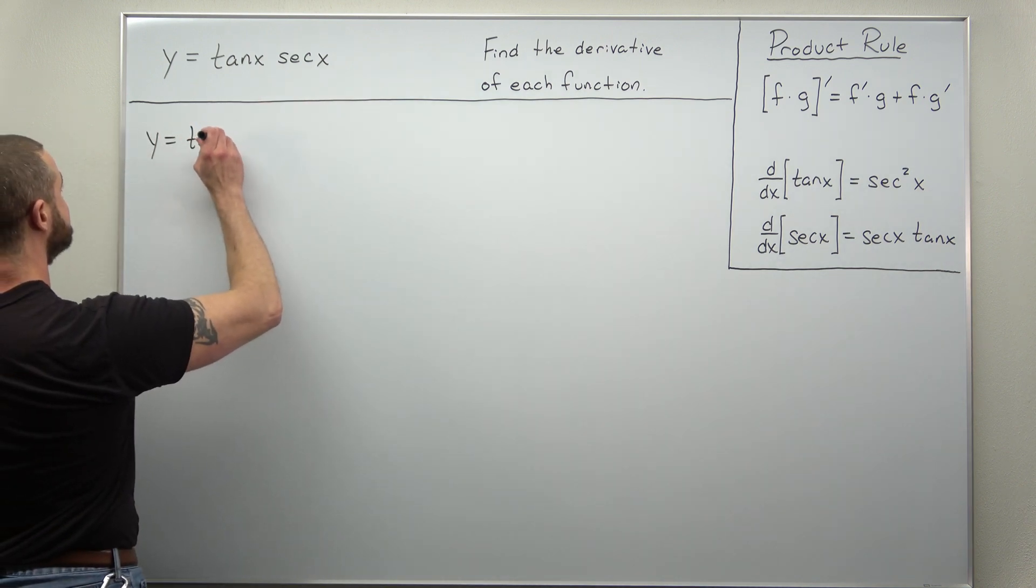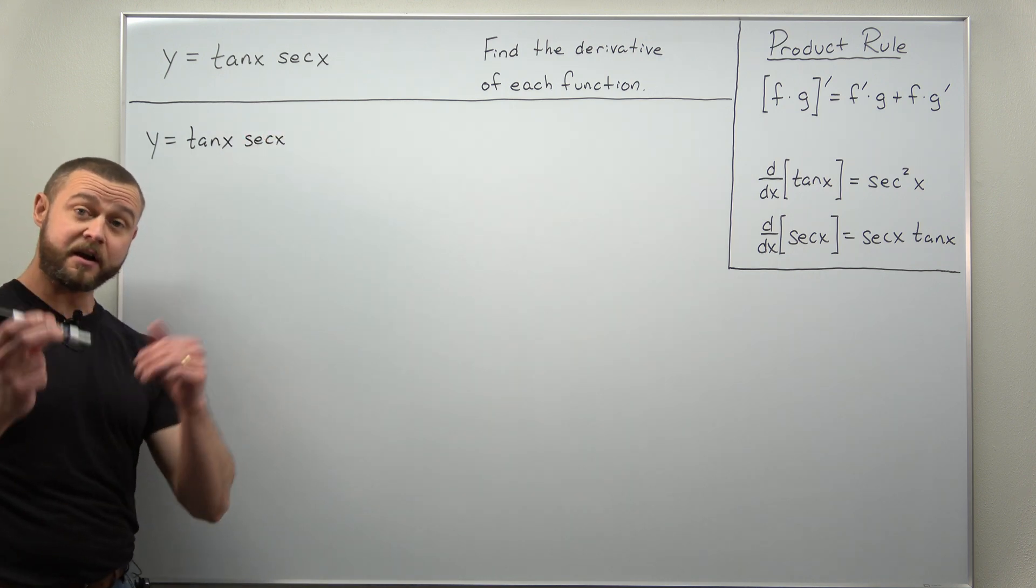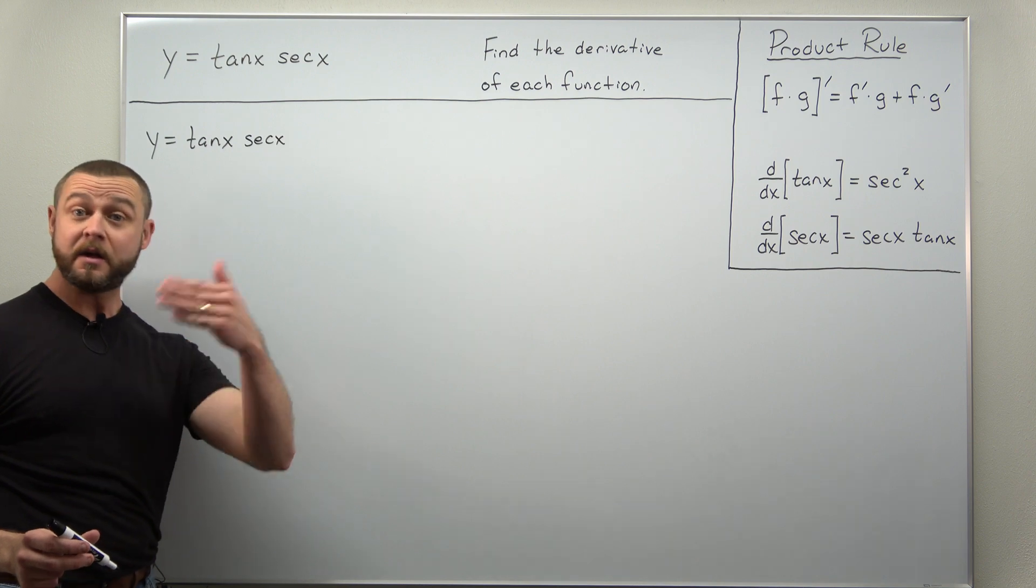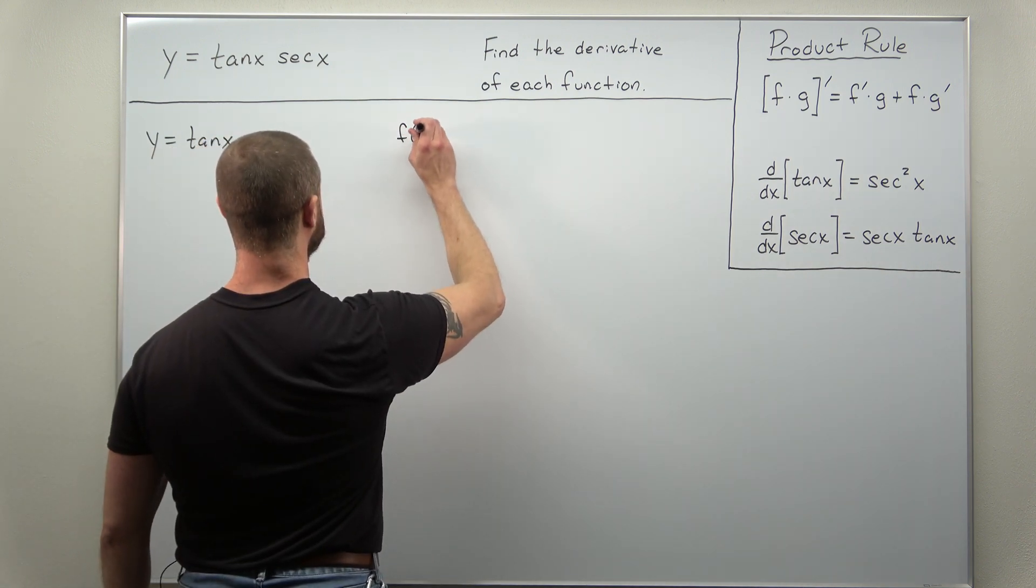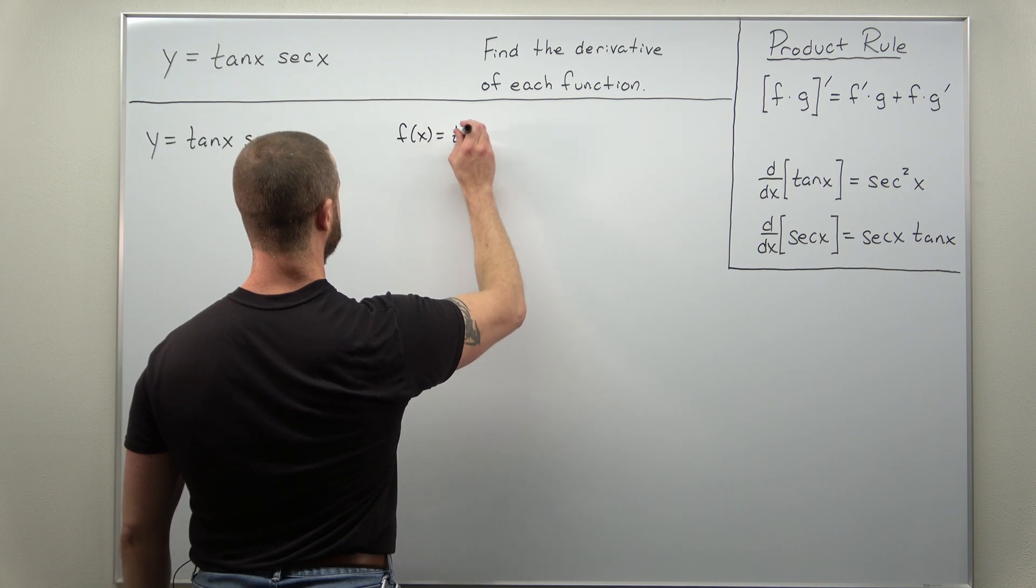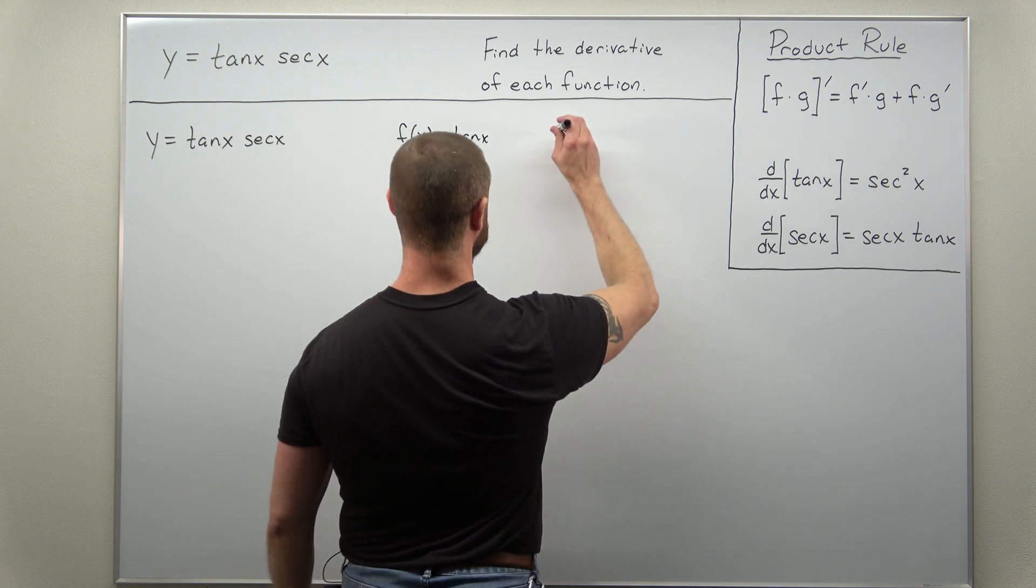It's tangent x times secant x, and here we have an obvious factorization already. It's going to be very easy to identify our f as tangent of x and the other function or factor g, that's going to be secant.